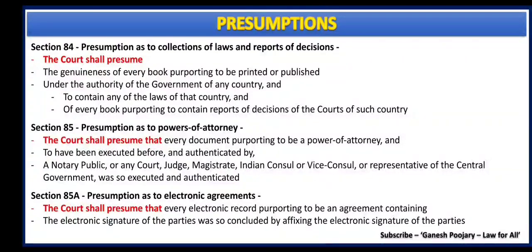Section 85 discusses about presumption as to power of attorney. When a particular document is executed and authenticated by a notary public, court, judge, magistrate, Indian consul, or vice-consul, or representatives of the central government, the court shall presume that such document is genuine. There are three amendment sections under section 85 — that is sections 85A, 85B, and 85C — added after the implementation of the Information Technology Act 2000. Section 85A discusses about presumption as to electronic agreements. It says the court shall presume that every electronic agreement concluded by affixing electronic signatures of the parties shall be considered as genuine.